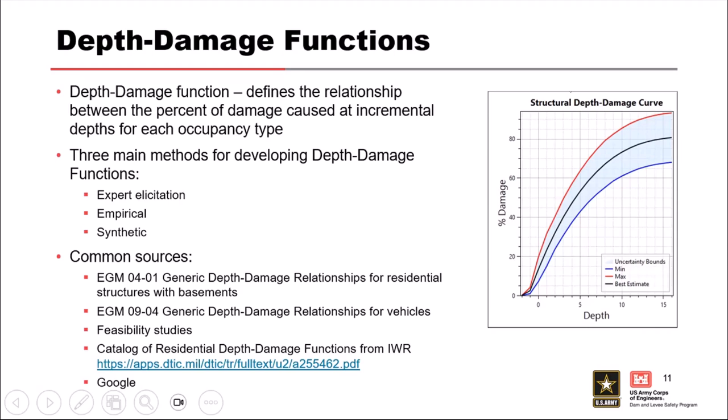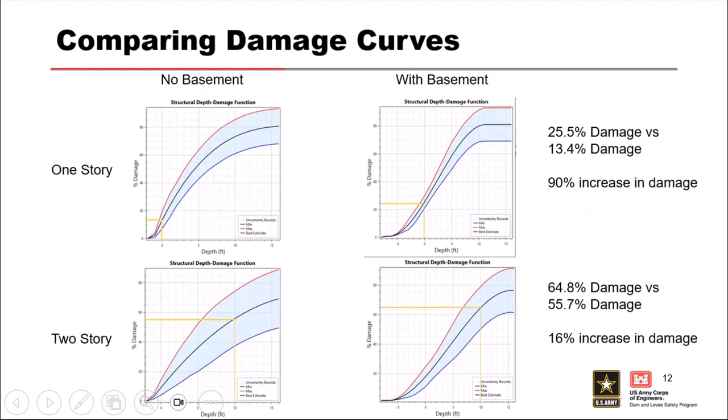Within the Corps, a lot of the curves we use are the EGM curves — Economic Guidance Memorandum. This is an analysis done by the Corps around 2003 using claims data. These are approved curves widely used across the Corps. For single-family houses they're fairly standard; for non-residential structures it's more of a grab bag depending on the region and type of flood hazard. Here's an example of those EGM curves — they break it out by one-story, two-story, with basement, and without.